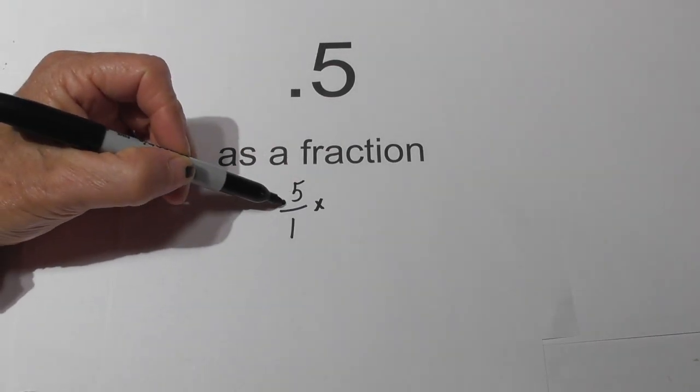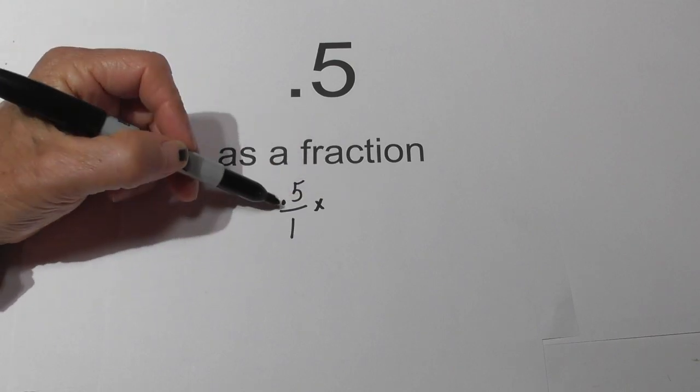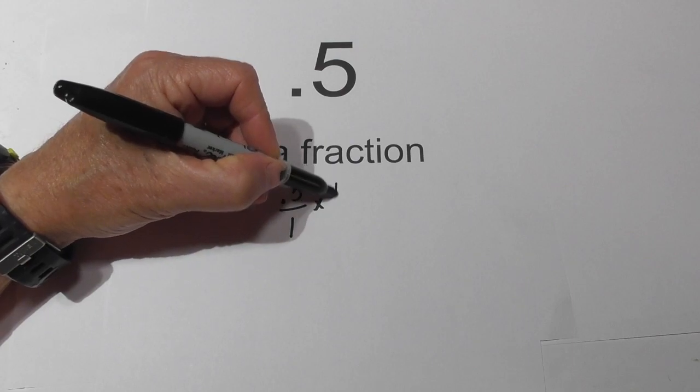Let me remind you: numbers to the right of a decimal go tens, hundreds, thousands. So we need to multiply it by 10.